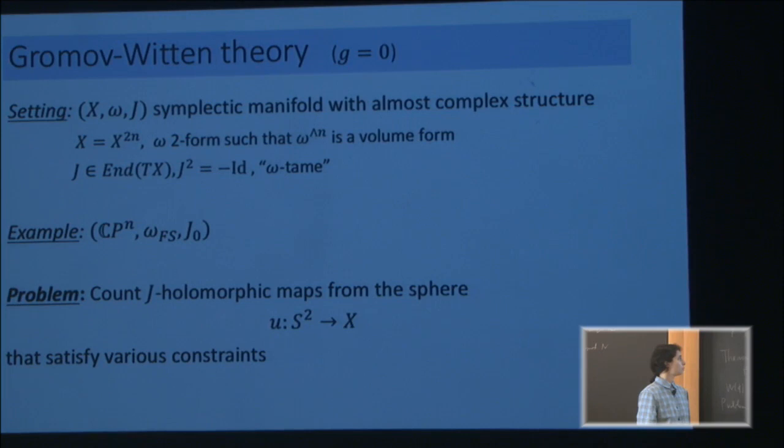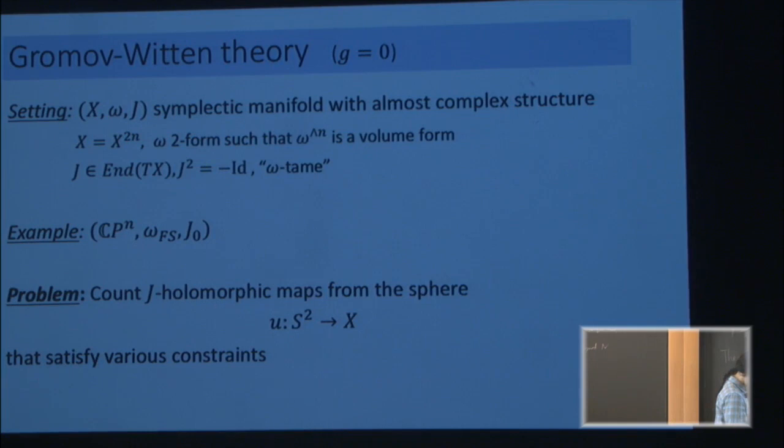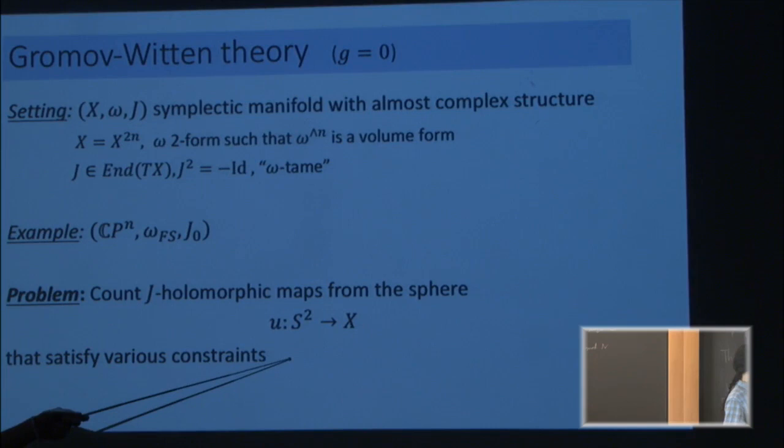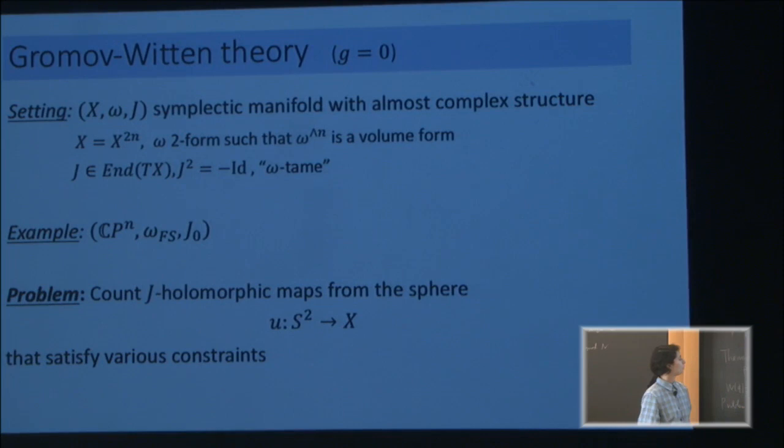We want to count holomorphic maps that satisfy certain constraints. I'm talking about genus zero, so my domain here is a genus zero Riemann surface — holomorphic, it has obviously a complex structure. You can also think of it as CP1 if you like.